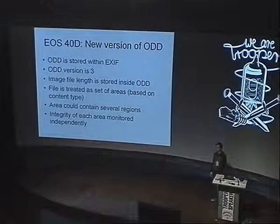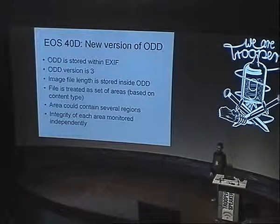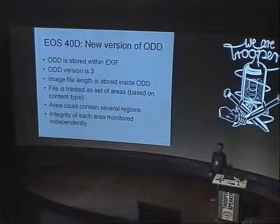The main problem for Canon and customers of that technology is that the key can be extracted from the camera. It's the biggest problem and it makes the whole technology useless. Later, I asked a friend who owned an EOS 40D to make several shots with original decision data enabled, and discovered that Canon had modified the system — original decision data version became number three.